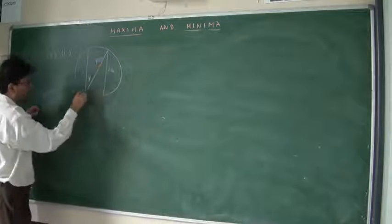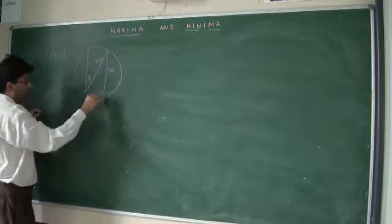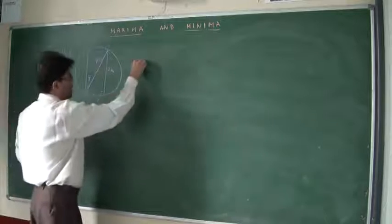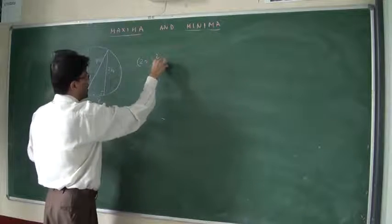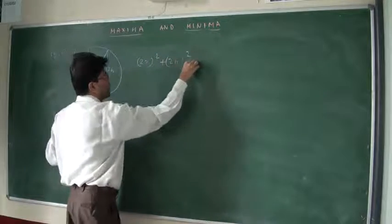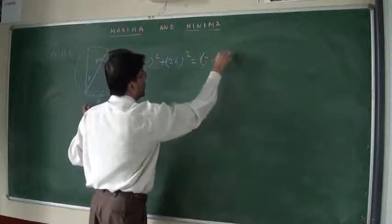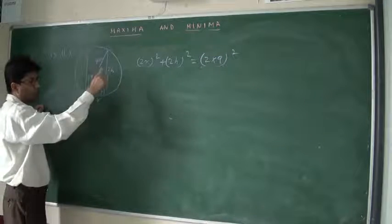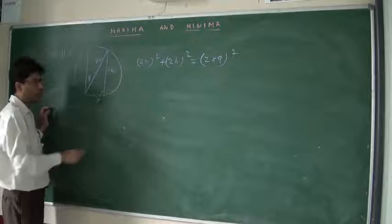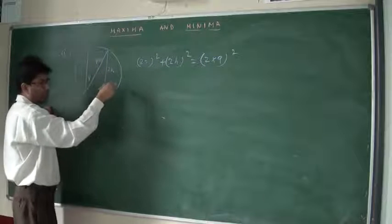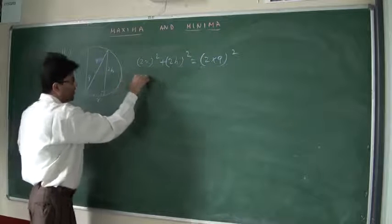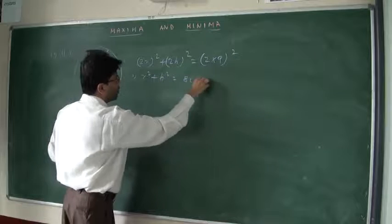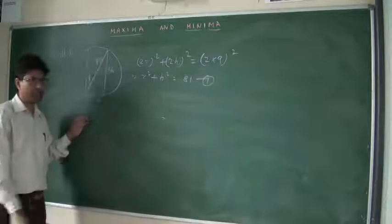This is one right angle triangle. I will use the Pythagorean theorem: (2r)² + (2h)² = (2×9)². The 2s cancel on both sides, that is why I took 2h instead of h. That gives r² + h² = 81. This is equation 1 — this is the known condition.